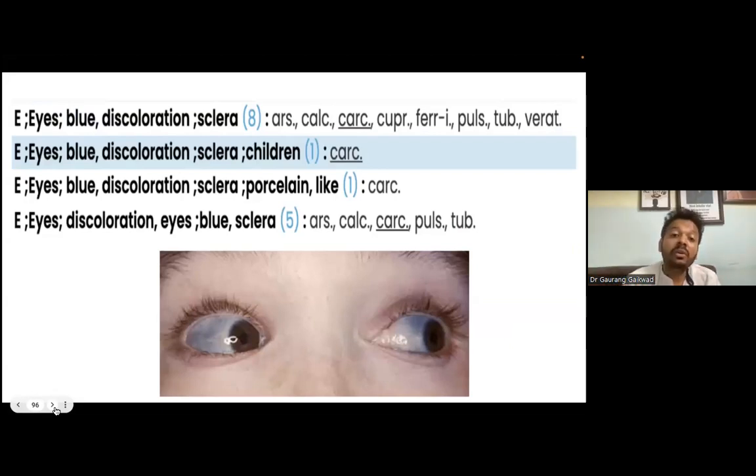Many children in today's time, around 20 to 30% of children I'm treating—many developmental delay children, many children with low immune system, many carcinogen children with rickets—I have observed they have a bluish sclera. Blue sclera in children, carcinogen is a very important remedy here.